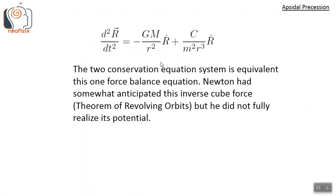The system of two conservation equations — angular momentum and energy conservation — is equivalent to one force balance equation. The acceleration of the smaller mass is determined by two force factors: the familiar gravitational force term −GMm/r², directed along the radial direction, and an additional term c/(m·r³), which comes from the modified gravitational field.